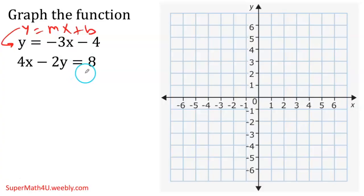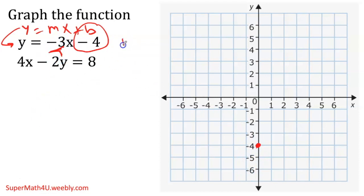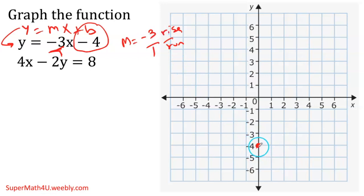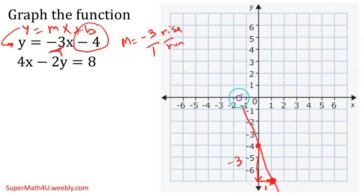The first equation has a y-intercept of negative 4, so I go to negative 4 on the y-axis. The slope is negative 3 over 1 — rise over run — so I go down 3 and right 1 to get my second point. Having two points, I draw my line. Not too bad — that's my first line.